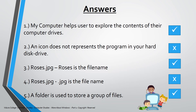Let's see the answers. Number one: My Computer helps the user to explore the contents of their computer drives — True. Number two: An icon does not represent the programs in your hard disk drive — False. Number three: Roses.jpg — Roses is the file name — True. Number four: Roses.jpg — dot jpg is the file name — False. Dot jpg is the file extension. Number five: A folder is used to store a group of files — True.